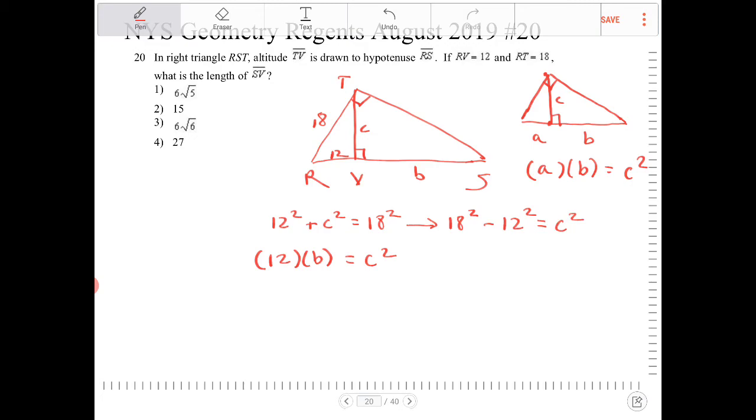Or you can think of it as C squared is equal to 18 squared minus 12 squared, whichever. And now I'm going to directly substitute that into this second equation. So I have 12 times B is equal to 18 squared minus 12 squared.